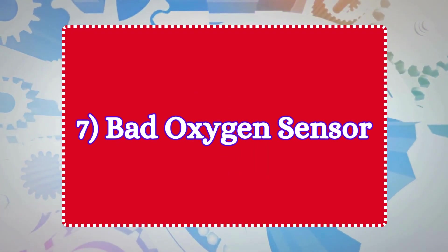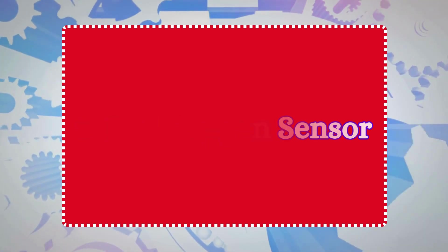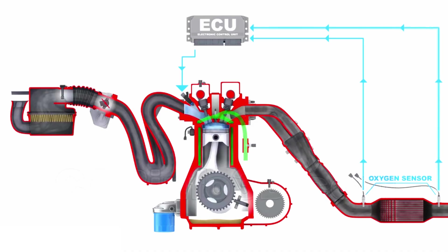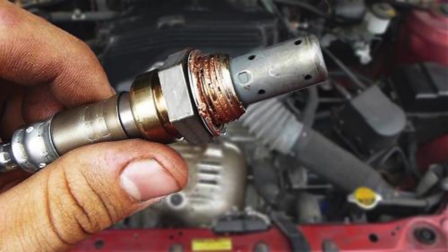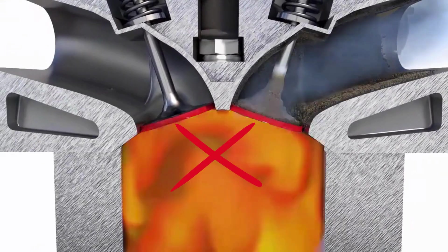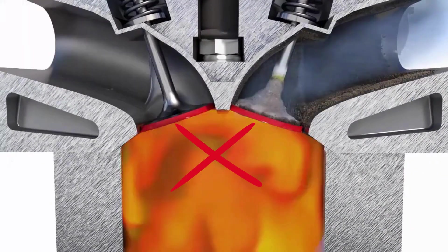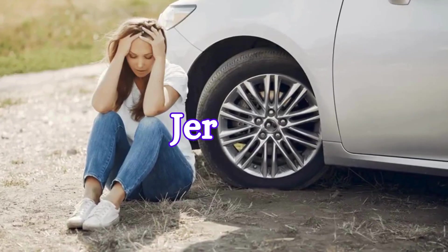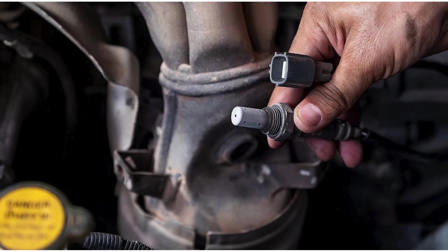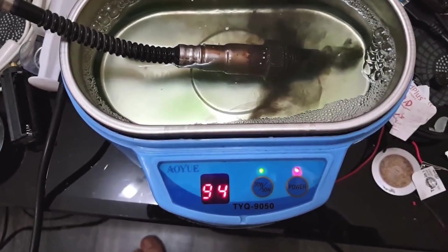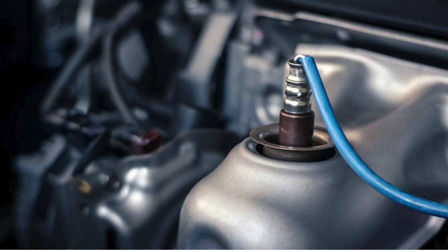7. Bad Oxygen Sensor. Oxygen sensors help regulate the fuel-air mixture by detecting the amount of unburned oxygen in the exhaust. A faulty sensor may cause an imbalance in the air-fuel mixture, resulting in engine performance issues and jerking. If your oxygen sensor is dirty, you should clean it by using a cleaner. If it is bad, you should replace it.